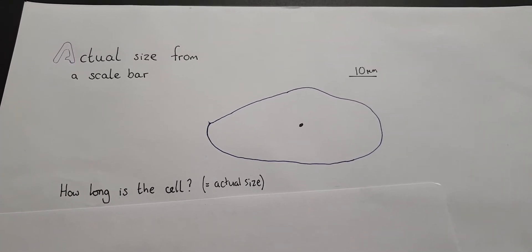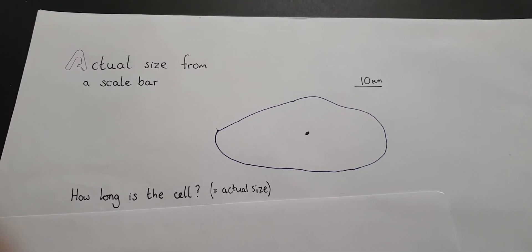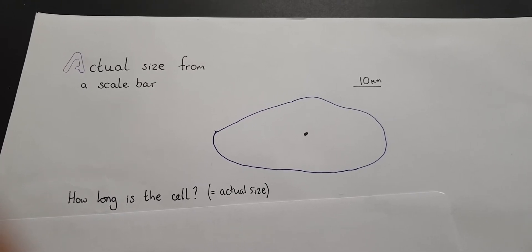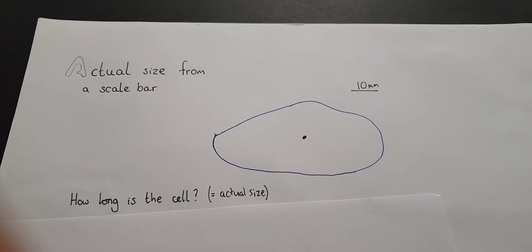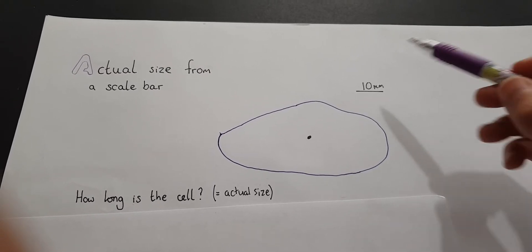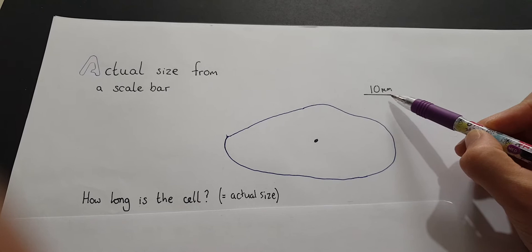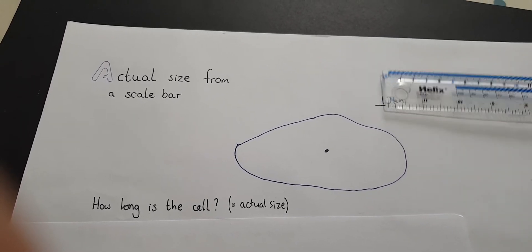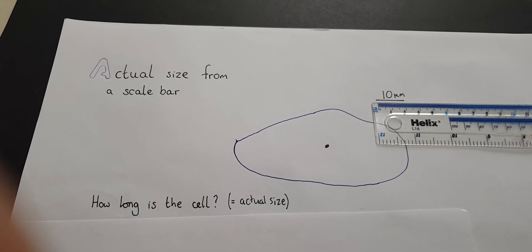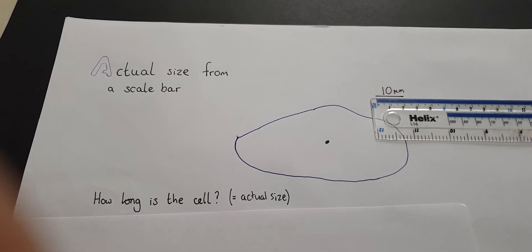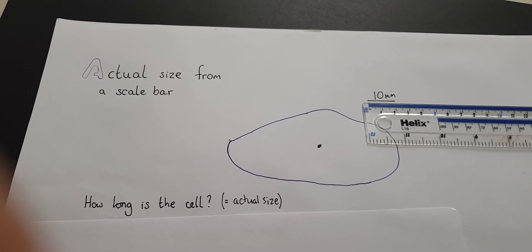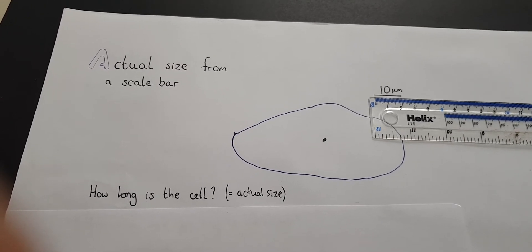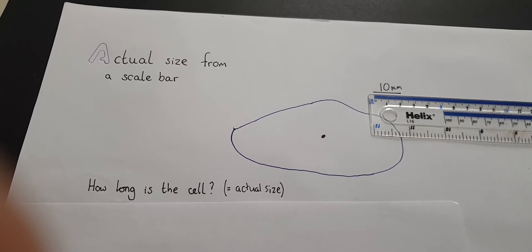The other way you might have to calculate actual size is if you're given a scale bar and not given the magnification. Here, the question asks how long is the cell — that is, what is the actual size of the cell? There's a scale bar shown, and what it means is that the length of the scale bar on the image represents 10 micrometers of actual size. So 20 millimeters of the image represents 10 micrometers of actual size.